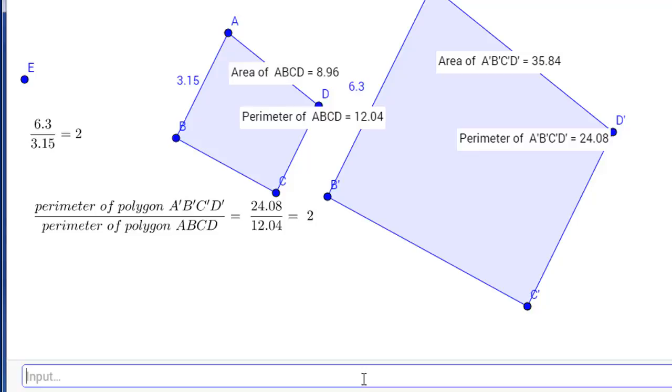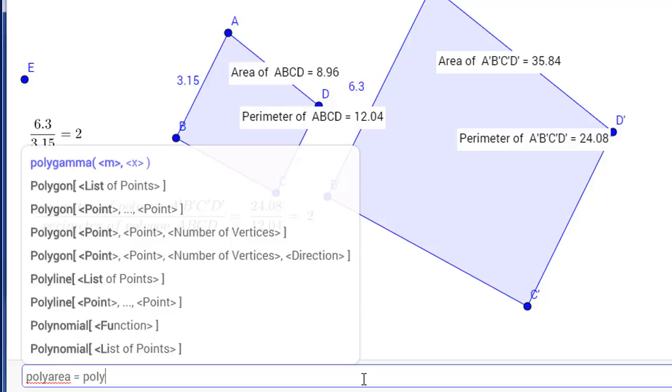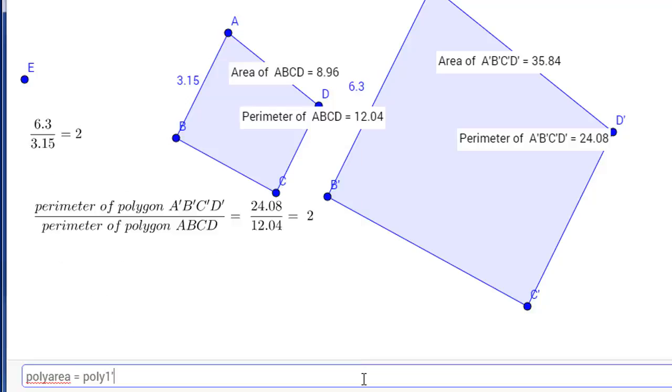So in the input box, we'll make poly area and set it equal to an area of the polygon 1 prime. And we're dividing that by poly 1.